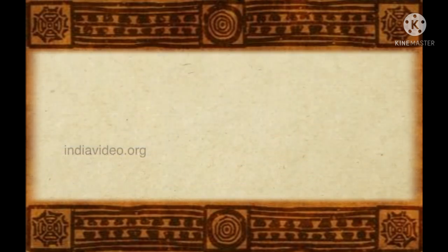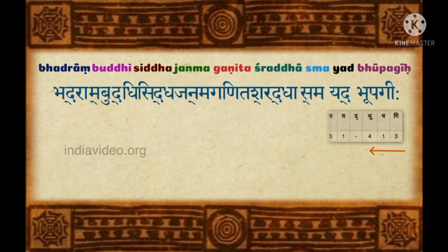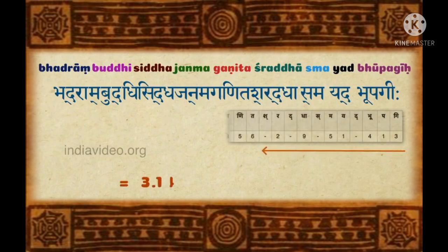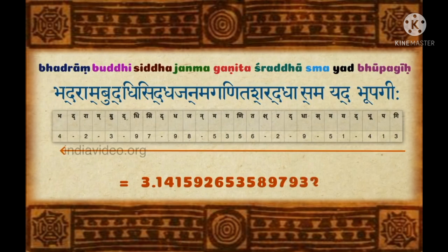Once we understand how the Katapayadi system is designed, we can start playing around with alphabets to come up with words or sentences that represent various numbers. A notable example appears in Sadratna Mahara that brilliantly illustrates the convenience of Katapayadi. When we decode certain words using the Katapayadi matrix, we get a series of digits corresponding to the value of pi correct up to 17 decimal places, with the last digit rounded off to 4. The decimal point is assumed, since Katapayadi does not have a way to encode it.